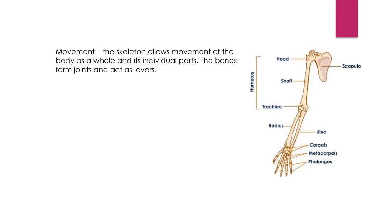Now as you can see in the diagram, this is the diagram of the hand and arms — it is a skeleton. The skeleton allows movement of the body as a whole and its individual parts. We can move our whole arm or just our fingers. The bones form joints and act as levers. As you can see in the diagram, the bones form joints at the fingers and at the shoulder.